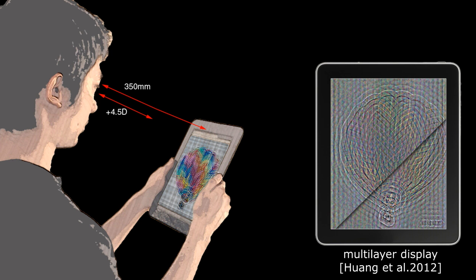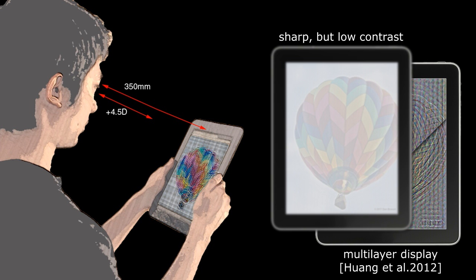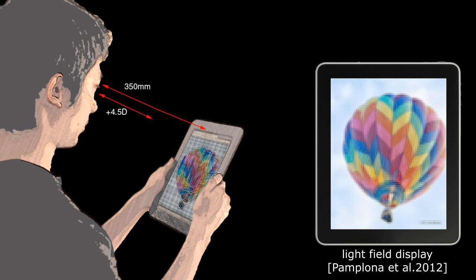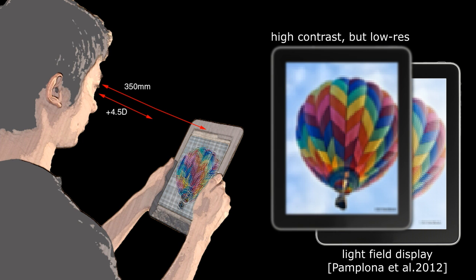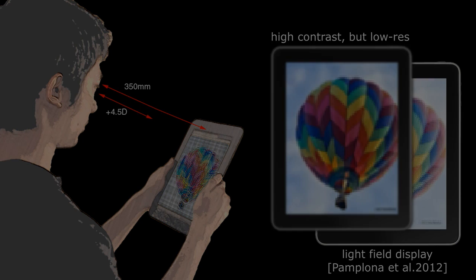Prior work pre-filters a multi-layer display. The image is in sharp focus but the contrast is low. A light field approach can address the contrast problem but has low spatial resolution due to the spatial angular trade-off of the hardware.